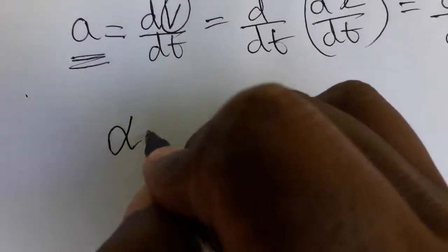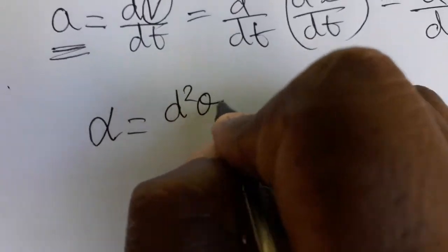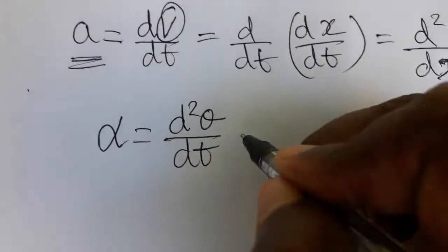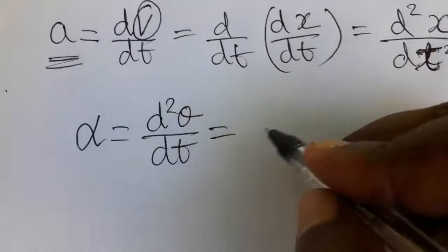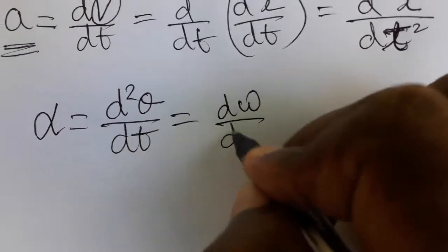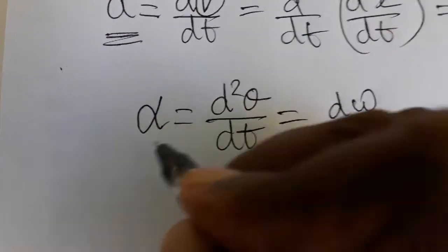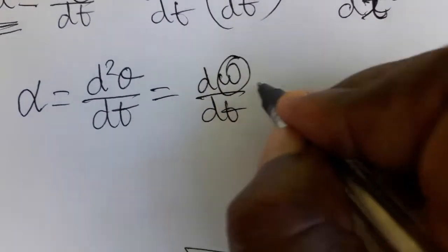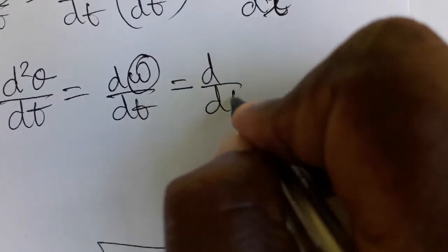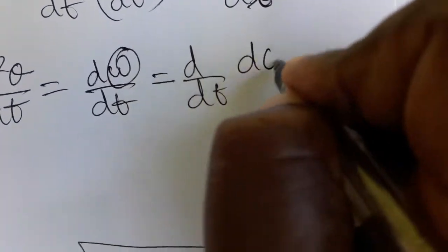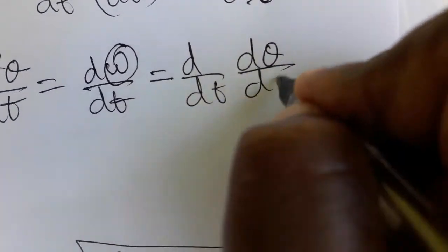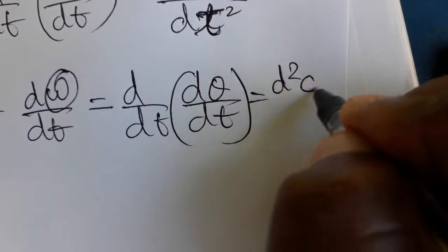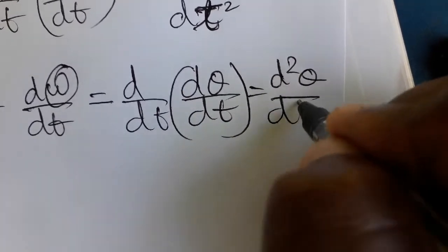Similarly, angular acceleration is equal to d²θ/dt². It is d omega by dt. Angular acceleration is angular velocity by time. Angular velocity is angular displacement by time, that is dθ/dt. So angular acceleration is d²θ/dt².